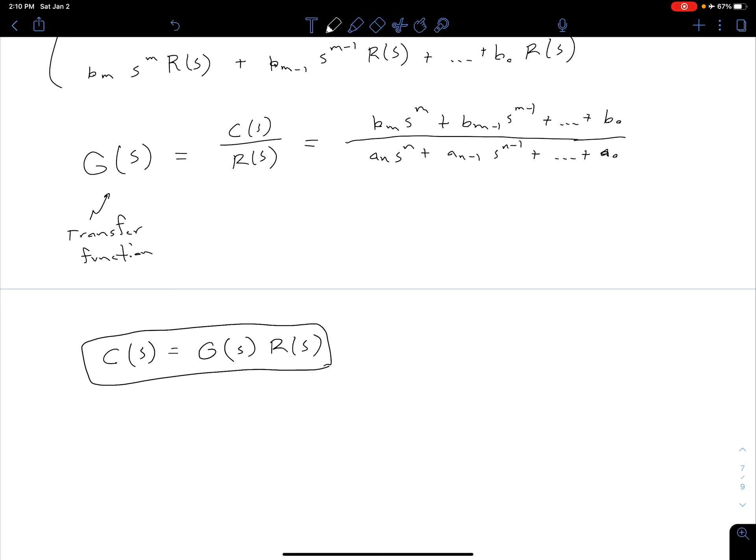So in general what that's telling us is that once we know this transfer function G(s) we can predict the output C(s) for a given input R(s).